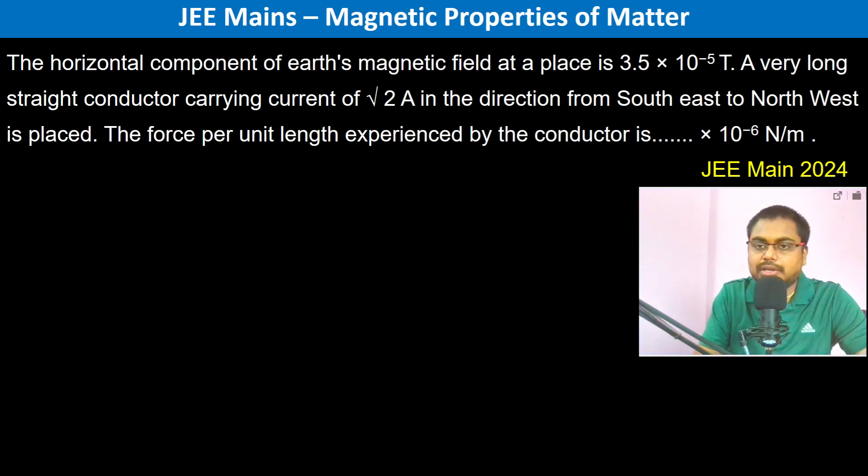The horizontal component of the earth's magnetic field is 3.5 × 10^-5 T. A very long straight conductor carrying current of √2 ampere is placed in the direction from south east to north west. So this is south east. Let us mark the directions.